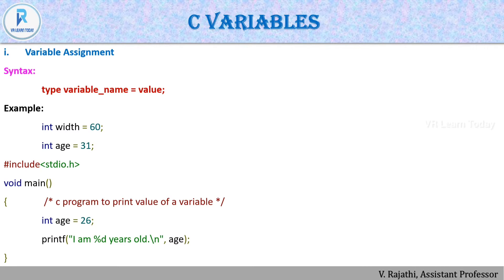Variable assignment, also called initialization, follows the syntax: data type, variable name, equals value. For example, 'int age = 31;'. In a C program, after the main function you declare 'int age = 26' and then use printf with the format specifier '%d' to print the age. The output of that program would be: 'I am 26 years old'.